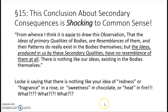This is supposed to be a big, shocking conclusion. He says: the ideas of primary qualities of bodies are resemblances of them, and their patterns do really exist in the bodies themselves. If you see a square thing, that perception of squareness really resembles the squareness of the object. If you see a round ball, your perception of roundness was caused by the roundness of the ball. But when it comes to secondary qualities, the ideas produced in us by these secondary qualities have no resemblance to them at all. There is nothing like our ideas of secondary qualities existing in the bodies themselves. So Locke is saying there is nothing like your idea of redness or a fragrance in a rose, nothing like your idea of sweetness that's actually in the chocolate, nothing like your idea of heat which is in the fire.